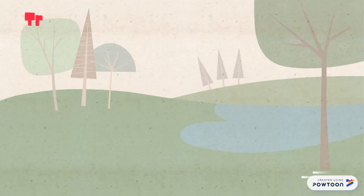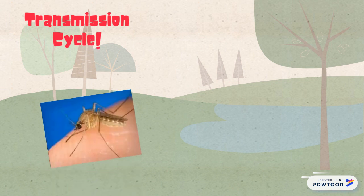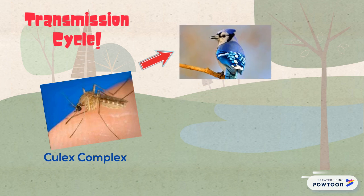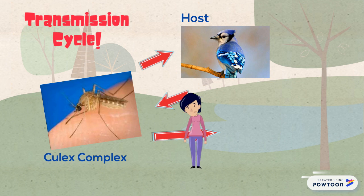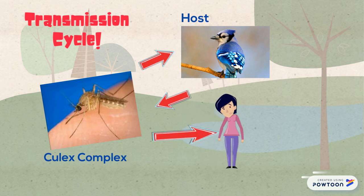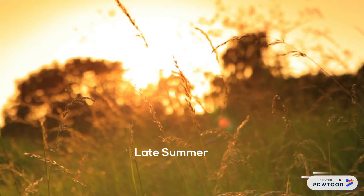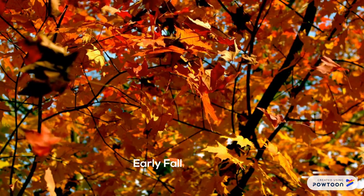Its transmission cycle is a little bit simple. It's from the mosquito from the Culex complex to the host, which is a bird, or to the human, which is the end host. It can affect all during early fall.